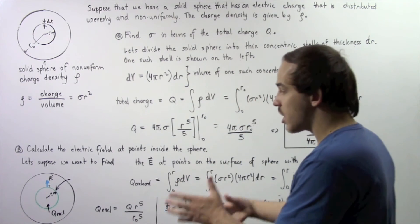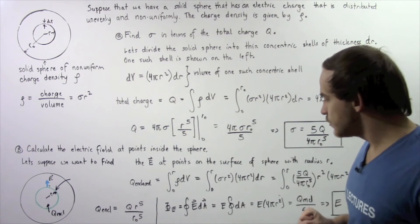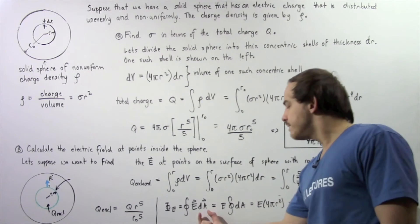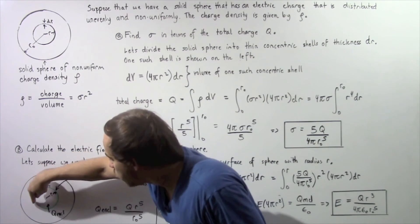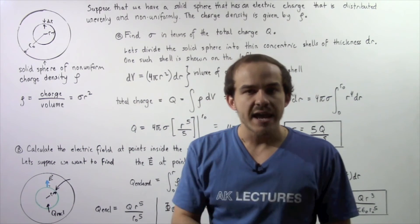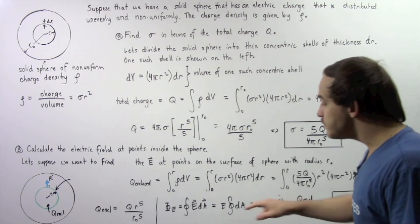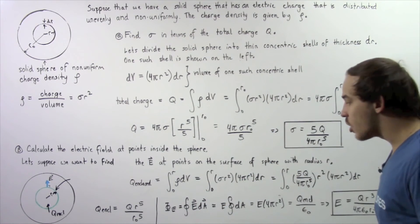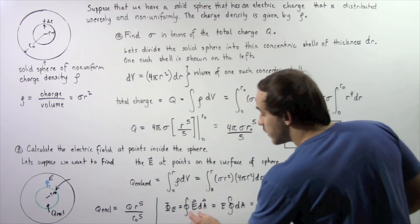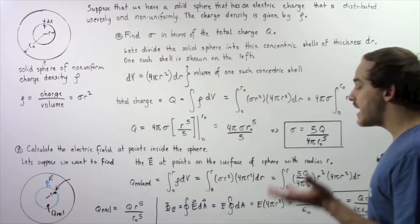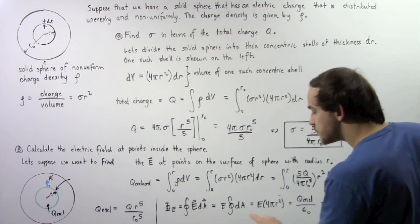Now we apply Gauss's law. The net electric flux equals the closed integral of the dot product of electric field E and area element dA. By the symmetry of the chosen sphere, the electric field is the same at every point on the green surface, perpendicular to it, and in the same direction as dA. So the angle between dA and E is zero, and cosine of zero is one.